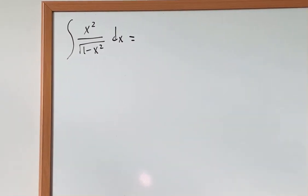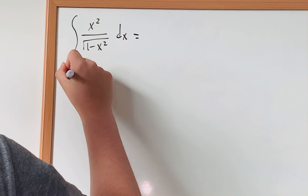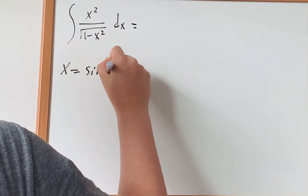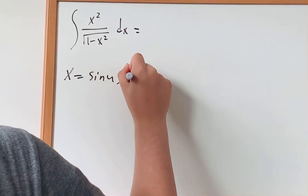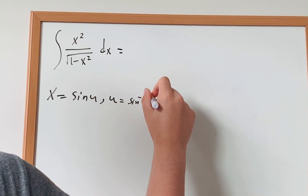So for this integral, I want to use a u-substitution method. I let x to be equal to sine of u, and using trig identities, u is equal to the inverse sine of x.